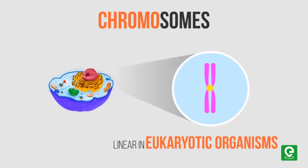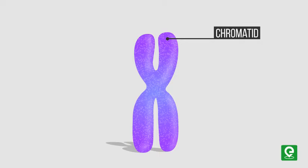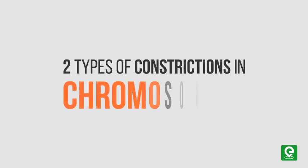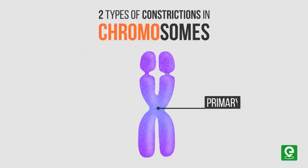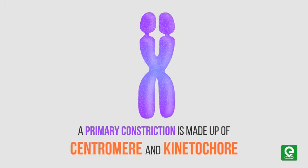A typical chromosome has similar structures called chromatids. The chromatids are connected at the center part called the centromere. There are two types of constrictions in chromosomes called primary and secondary constrictions. A primary constriction is made up of the centromere and kinetochore.